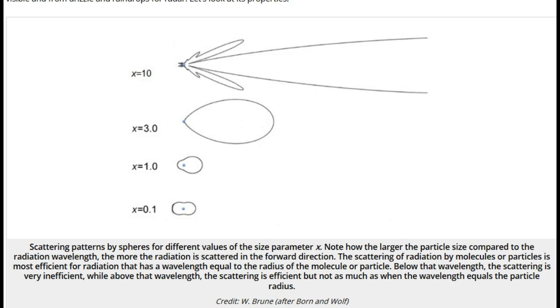This figure on scattering patterns for different size parameters illustrates the importance of the size parameter. For size parameters 1 and above, that is, the particle radius more than 1/6 of the radiation wavelength, we see that the radiation is strongly scattered in the forward direction, with little radiation scattered to the back or side.